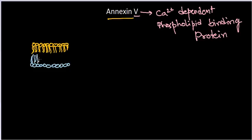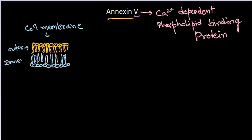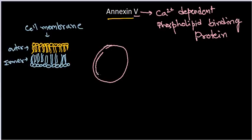Remember, phospholipids have a hydrophilic head and hydrophobic tail — they produce this phospholipid layer. So this is the cell membrane layer. Now, normally there are certain types of phospholipids that prefer to be placed in the outer layer, and there are certain types that prefer to be placed in the inner layer. If I draw a cell here, there is a lipid bilayer. And if I zoom into a part of this section, it will look something like this.